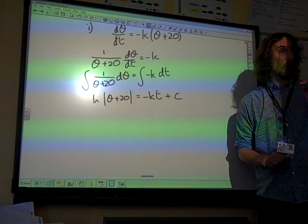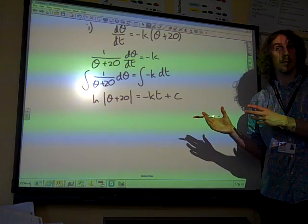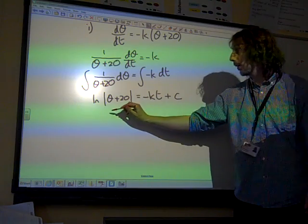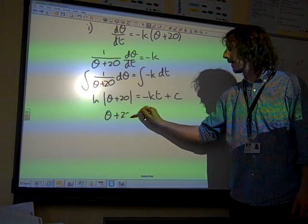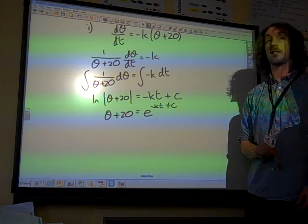The question actually wanted to know θ in terms of the other things. So we're now going to get θ on its own. So we're going to get rid of the natural log. This makes it θ + 20 = e^(-kt + c).